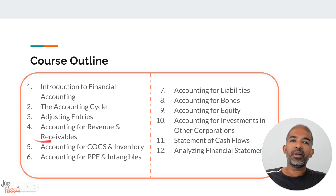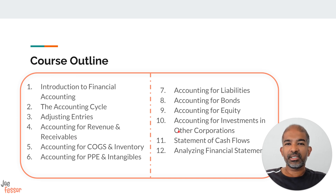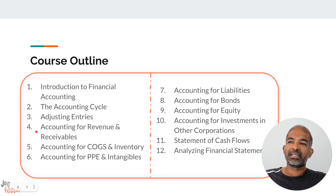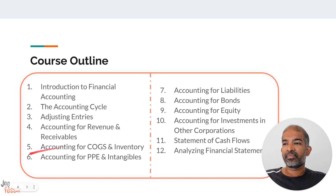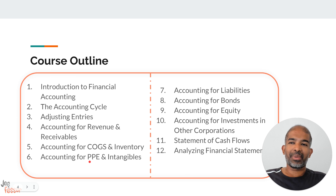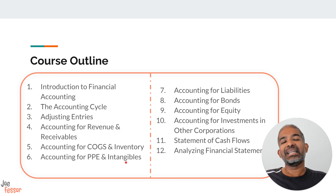From part four until part ten, we'll be focusing on different parts of the financial statements and looking in detail at how to account for these sections. In part four, we look at how to account for revenues and receivables. In part five, we'll learn how to account for cost of goods sold and look at different inventory management techniques. And in part six, we'll look at how to account for fixed assets, property and equipment, and also intangible assets.